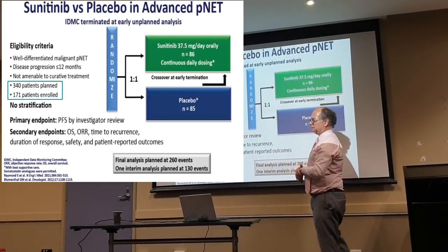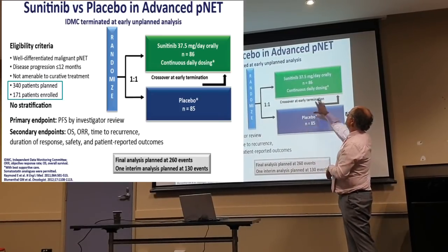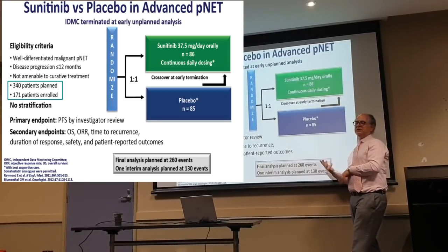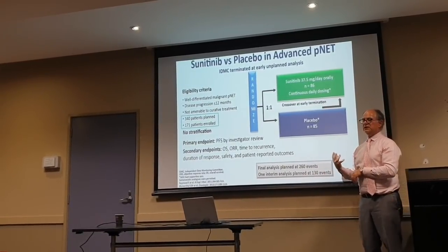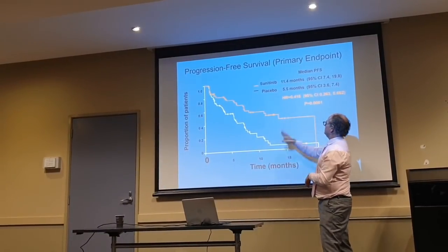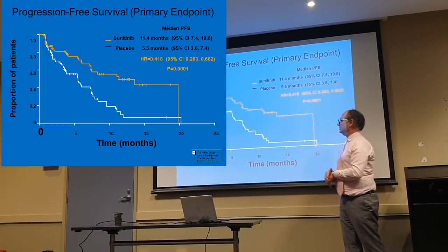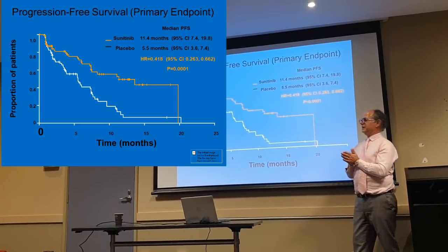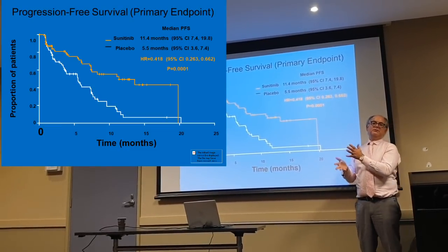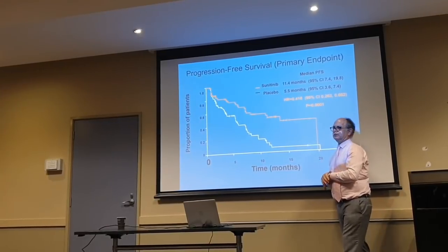In the case of sunitinib, it's also been assessed in pancreatic NETs, randomised to either sunitinib versus placebo. Sunitinib blocks blood vessel formation within tumours — we also use it in kidney cancer and special types of gastrointestinal tumours. It showed activity in patients with pancreatic NETs, with the sunitinib group having better disease control duration compared to placebo, and it's been approved in Australia. The problem in Australia is that patients who have had everolimus and whose disease progresses can't get access to sunitinib — you can only have one or the other, unless the patient is intolerant to everolimus.